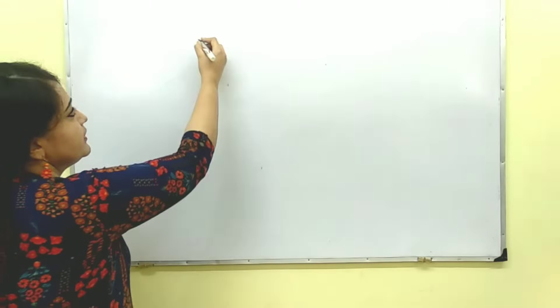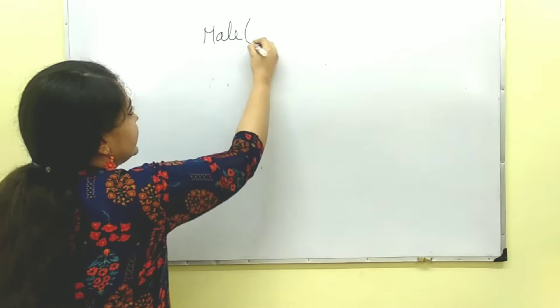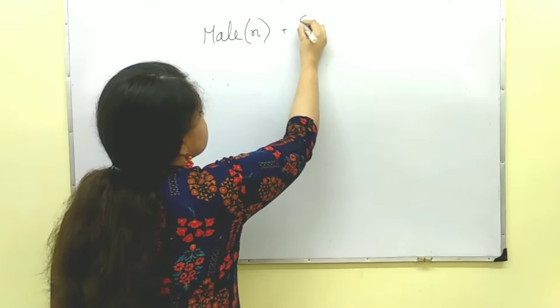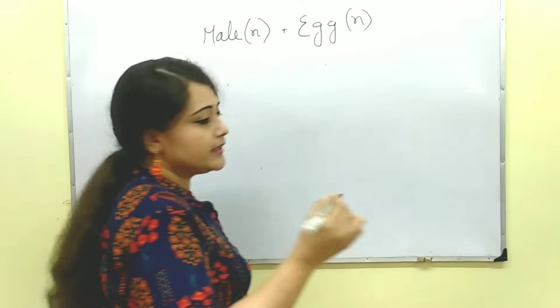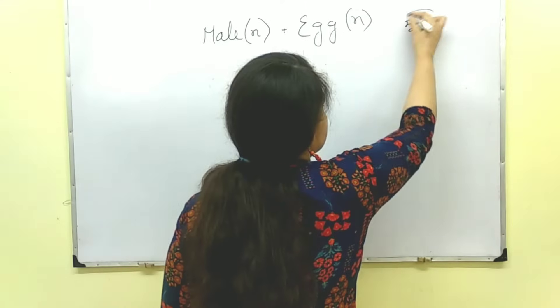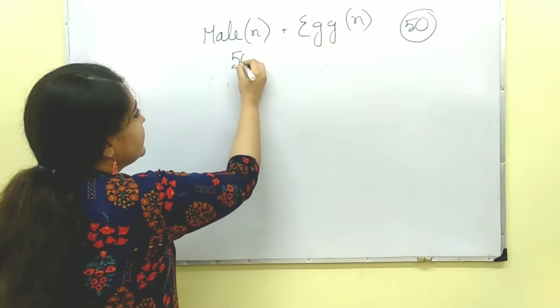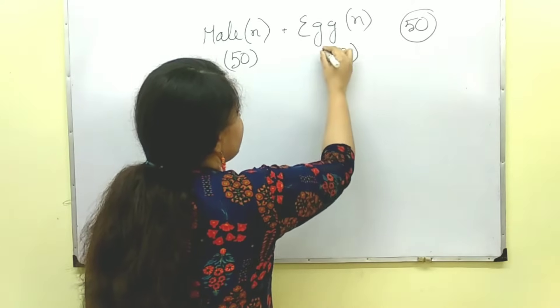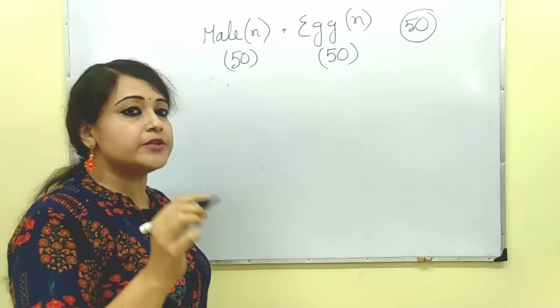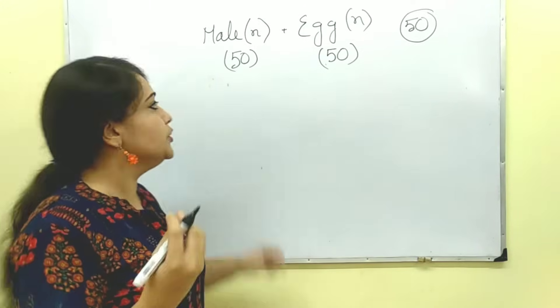First we should know how seeds are produced. Male gametes, which are haploid, fuse with the female gamete or egg, that is also haploid, and after their fertilization, the ovule is produced and this ovule gives rise to seeds. But here we require 50 seeds. So 50 male gametes would be required and 50 female gametes, that is eggs, would be required.